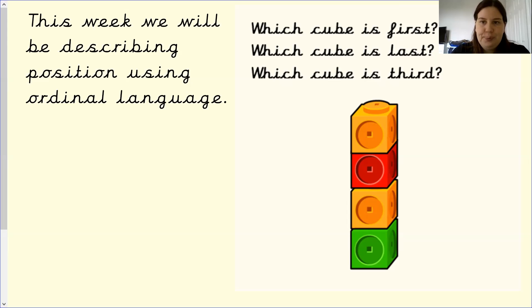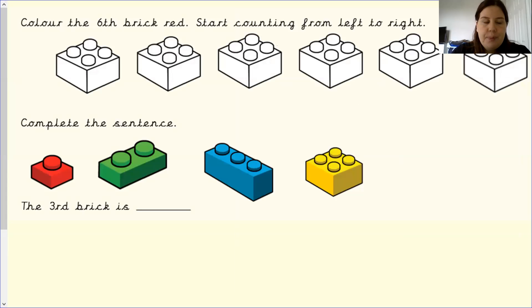So colour the sixth brick red. So that means you'd have to count along from left to right, as it says, one, two, three, four, five, six, or first, second, third, fourth, fifth, sixth.